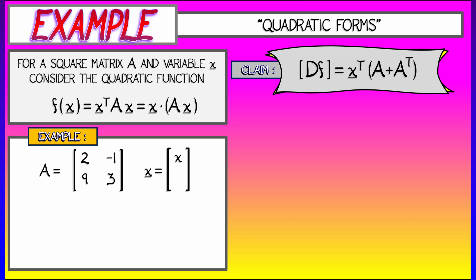Then let's build this quadratic function directly in the case where the variable x is the column vector x and y. Then what is f of x? Well, it's this xy transpose times A times xy. Multiply that out, and you're going to get 2x squared minus xy plus 9xy plus 3y squared.